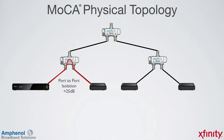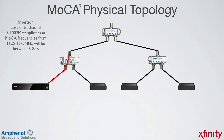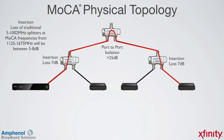Each MOCA signal path normally will travel through one port-to-port isolation path. If there are more than two MOCA devices, the signal will go through the insertion loss of one splitter. Insertion loss of traditional 5 to 1002 MHz splitters at MOCA frequencies from 1125 to 1675 MHz will be between 5 to 8 dB — in these examples we'll use 7 dB. The signal then flows through the port-to-port isolation of greater than 25 dB of a second splitter, and another insertion loss of 7 dB of a third splitter, for a total loss of 39 dB or greater.